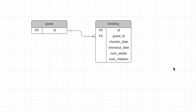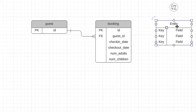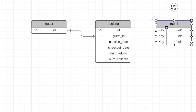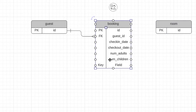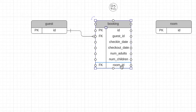What about hotel rooms? We don't know much about them from this requirement, other than that a booking is made for a room, but they are pretty important for hotels. Let's add a table for the room with an ID for now. We can link this to the booking table by putting the room ID in the booking table. So that's requirement number one met.